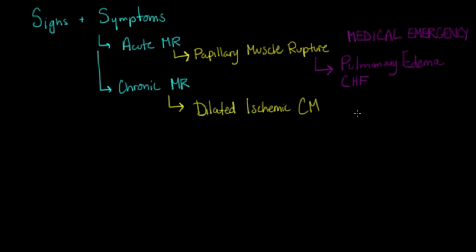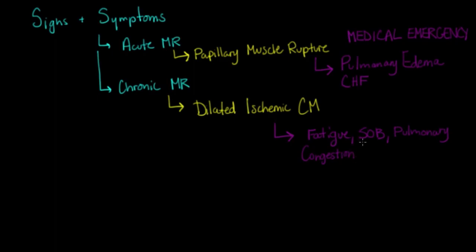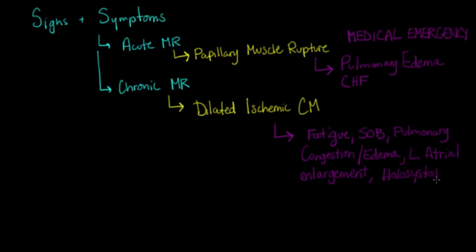For chronic mitral regurgitation — such as dilated ischemic cardiomyopathy — where there has been time to adjust to these pressures, you'll see things like fatigue, shortness of breath, and some pulmonary congestion or edema, but not the rapidly developing type seen in acute MR. Other signs include left atrial enlargement, which may be visible on an EKG or echo. On auscultation, you should be able to hear a holosystolic murmur at the apex — the mitral region — in the fifth intercostal space at the midclavicular line.